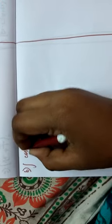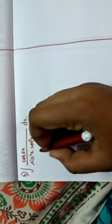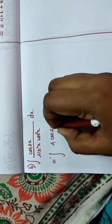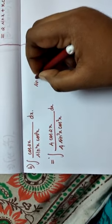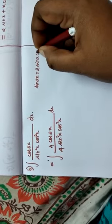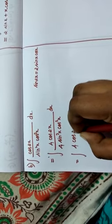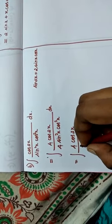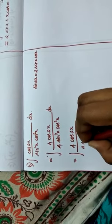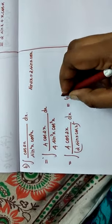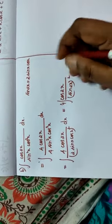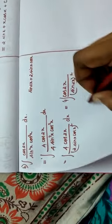For our sixth problem: integral of cos 2x divided by sin squared x cos squared x dx. I am going to multiply and divide by 4. So we have 4 cos 2x divided by 4 sin squared x cos squared x. Using the formula sin 2x equals 2 sin x cos x, the denominator becomes 4 cos 2x divided by sin 2x, the whole squared.